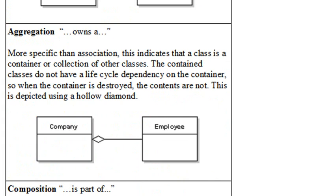An aggregation is even a stronger relationship. More specific than association, this indicates that a class is a container or collection of other classes. The contained classes do not have a lifecycle dependency on the container. Basically, that means if you destroy the class, it doesn't destroy the classes inside itself. For example, a company might contain the class employees. But if you destroy the company, the class employees still exist.